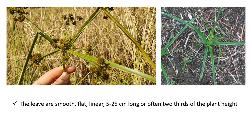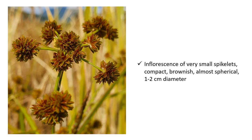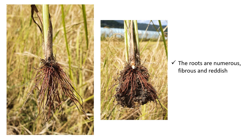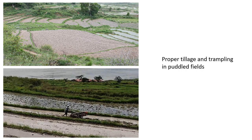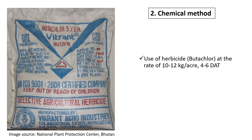The leaves are smooth, flat, and linear, 5 to 25 cm long or often two-thirds of the plant height. It has inflorescence of very small spikelets that are compact, brownish, and almost spherical, 1 to 2 cm in diameter. The roots are numerous, fibrous and reddish in color. Management: It can be controlled by cultural practices such as flooding of rice fields, performing proper tillage, and trampling in puddled fields, as well as by hand weeding. It can be chemically controlled using Butachlor herbicide at the rate of 10 to 12 kg per acre, 4 to 6 days after transplantation.